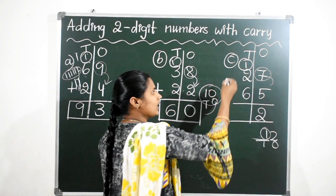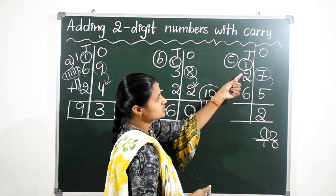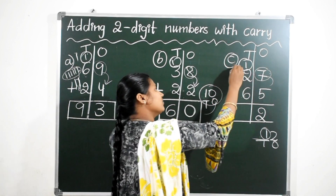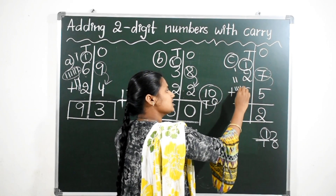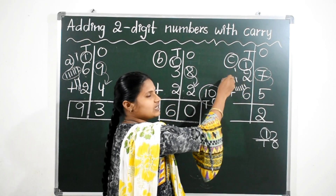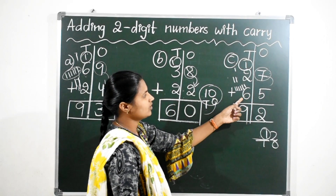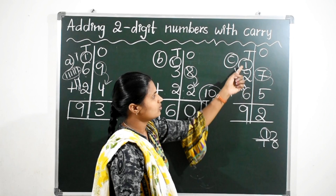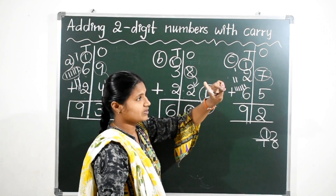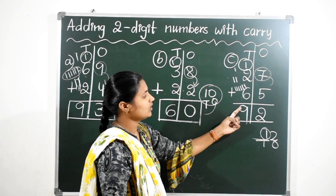Now add 1, 2, and 6. 1 plus 2 is 3; 3 plus 6 — here 6 is the big number compared to 1 and 2. Keep 6 in mind; 6 after 2 numbers: 7 and 8; then 8 after 1 more number: 9. So the answer is 92.